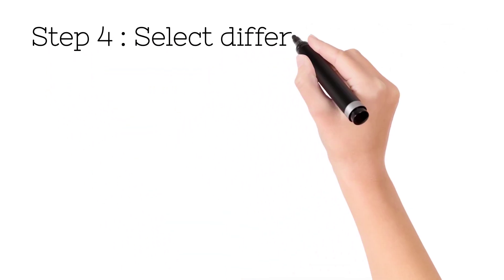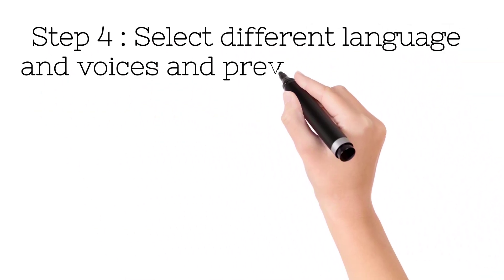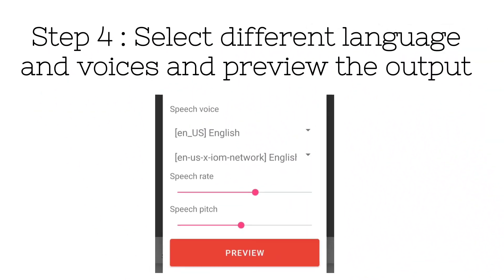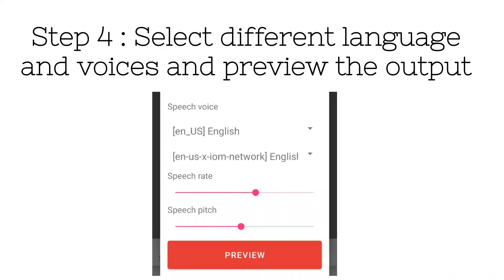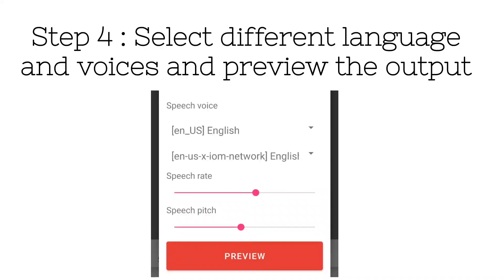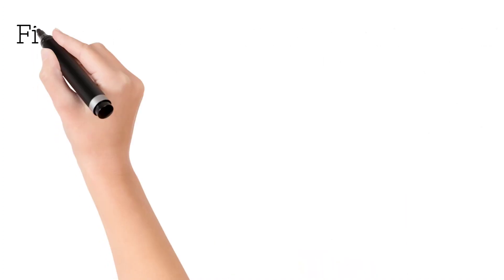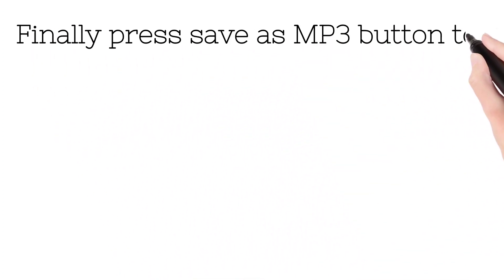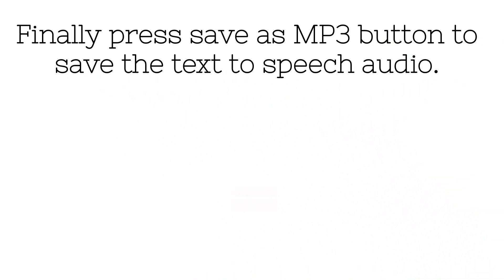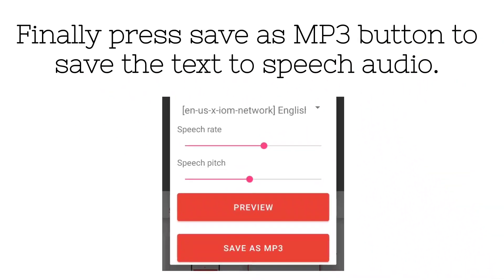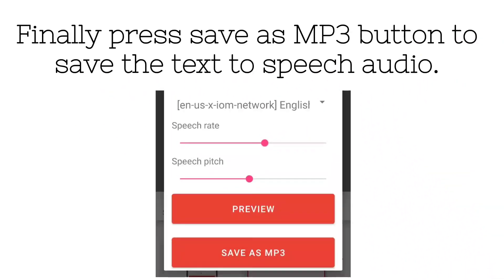Step 4: Select different language and voices and preview the output. Finally press save as MP3 button to save the text-to-speech audio.